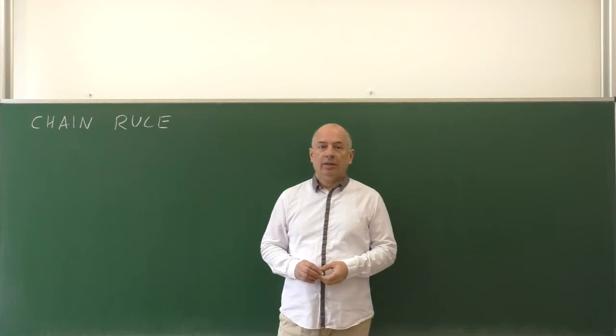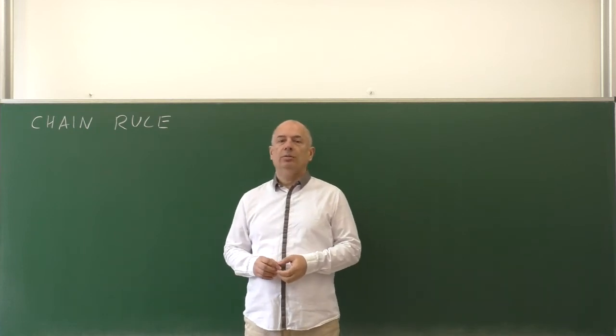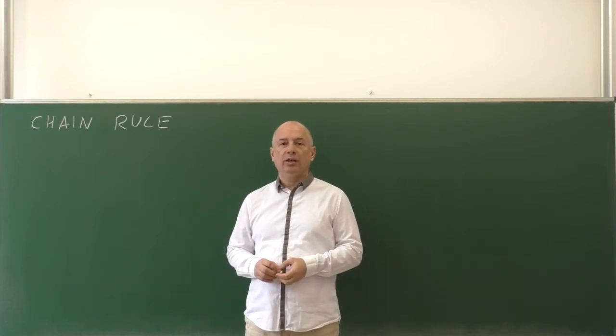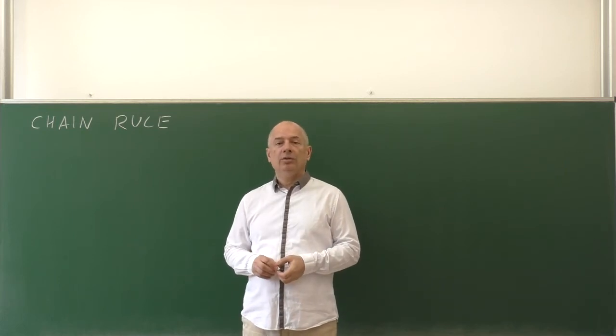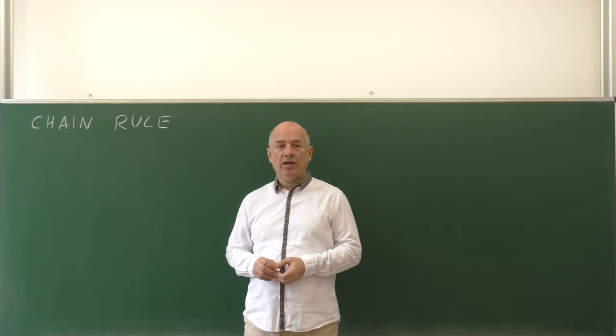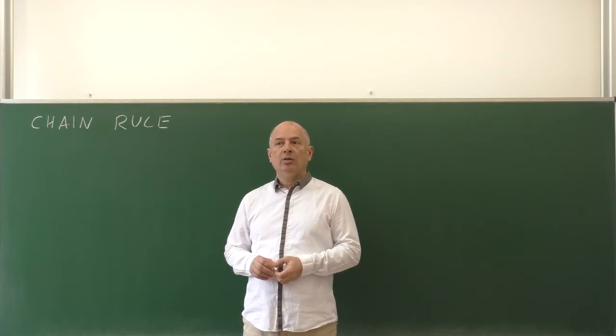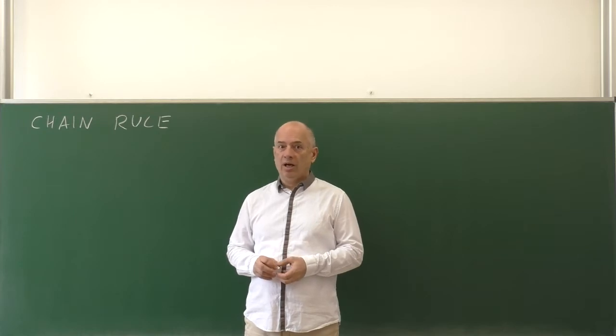The topic of this section is chain rule. Chain rule tells us how to differentiate a composite function. First, we will repeat the chain rule for a function of one variable and then we will generalize this to a vector function of a vector argument.